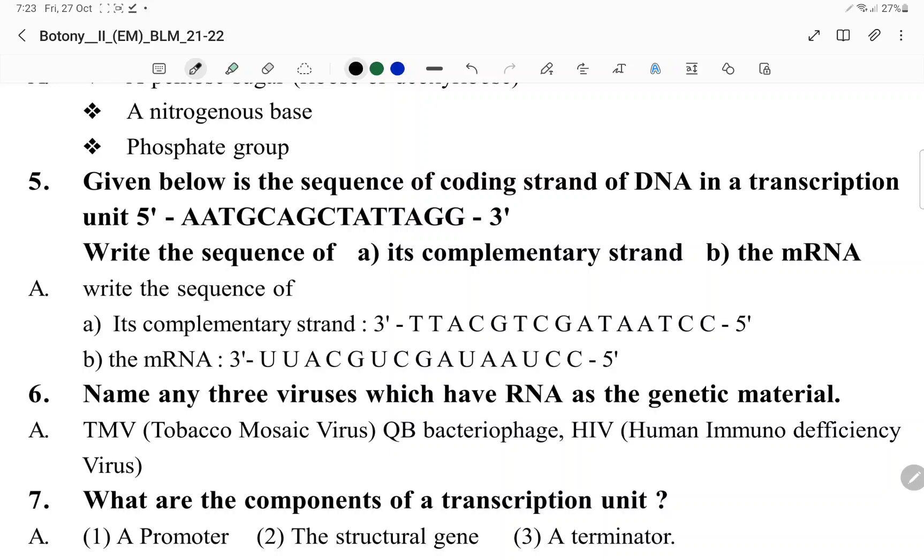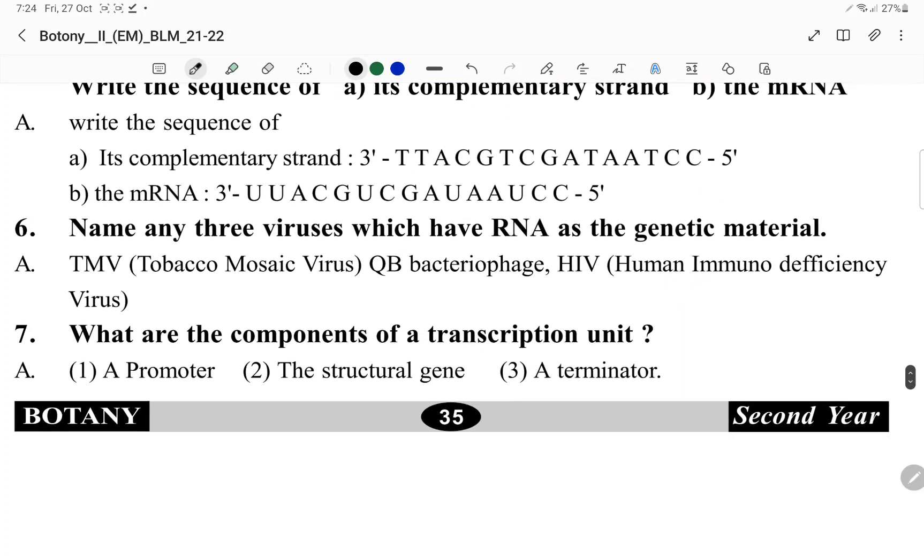Three viruses which have RNA as genetic material: tobacco mosaic virus, HIV, and bacteriophage. The transcription unit has three components: promoter, structural gene, and terminator.